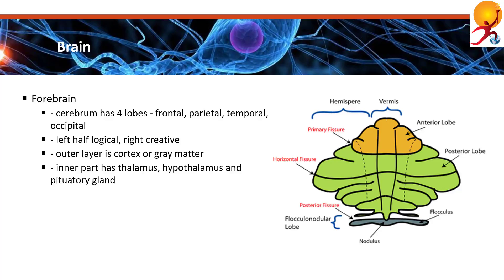The hypothalamus controls the pulse, thirst, appetite, sleep patterns and other processes in our body that happen automatically. It also controls the pituitary gland, which makes hormones that control our growth, metabolism, digestion, sexual maturity and response to stress.